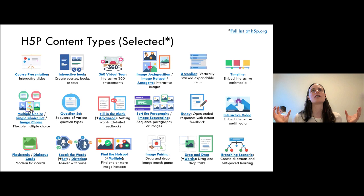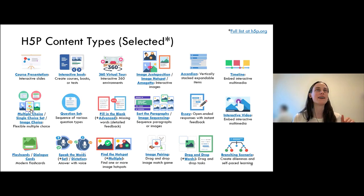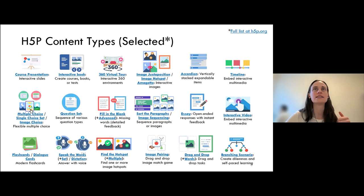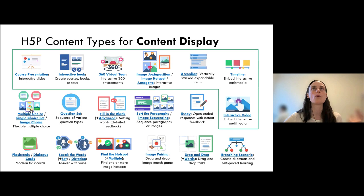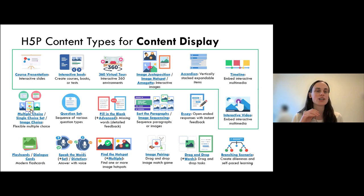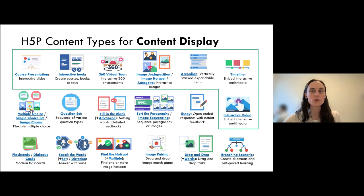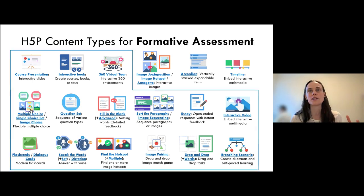In terms of H5P, there are a ton of different content types — this is just a few of them. If you want to explore any of these later on your own time, these each link to examples of that particular content type. H5P can work well for displaying content in your course — for example, course presentations, course books, timelines, and accordions — and it can also work really well for formative assessment.